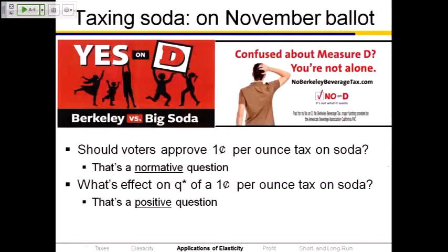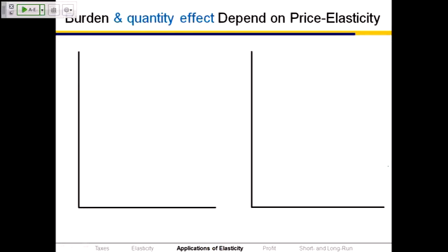This is relevant in a public policy setting. There's a ballot measure on the Berkeley ballot — Measure D — a soda tax: a one-cent-per-ounce tax on soda pop, Coke, Sprite, ginger ale. October 20th is the deadline to register to vote, by the way. Whether voters should approve Measure D is a normative question we can't answer. But what's the effect of approving it is positive economic analysis — and we can do that. Both the burden of the tax and the quantity effect depend upon the price elasticity of demand.